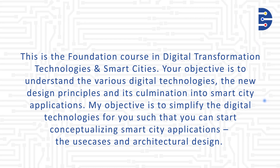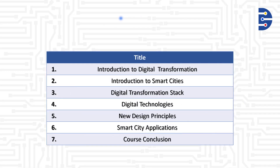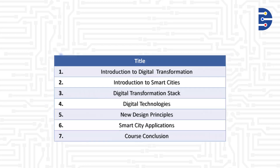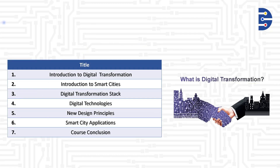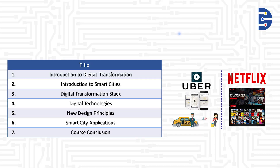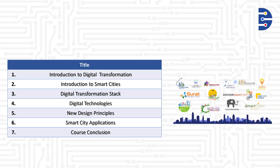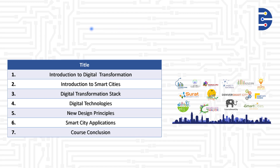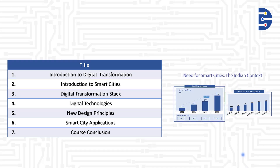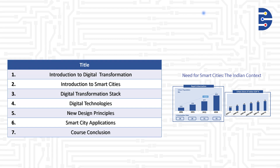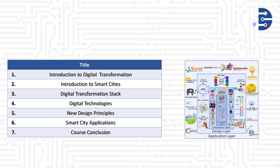Let us look at the topics we will be covering through this course. We will start off with an introduction to digital transformation — what is digital transformation, what are the examples of digital transformation, and why digital transformation is important for businesses to survive. We will then look at smart cities: what do we mean by smart cities, the objectives, trends, and challenges in smart city applications. We will also look at smart cities from an Indian context, and introduce the digital transformation stack and the role of SMAC in the digital transformation stack.